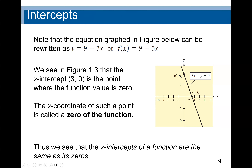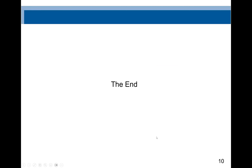Any value of x will give us a different value of y. In the figure, we can see that the point (3, 0) is the x-intercept, and (0, 9) is the y-intercept. That will be the conclusion of this lecture.